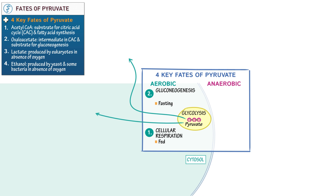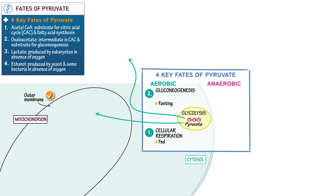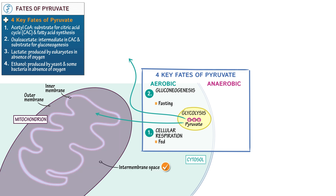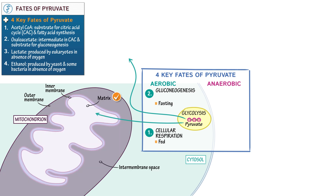Begin with cellular respiration, in which the key fate of pyruvate is acetyl-CoA. Draw a mitochondrion with the outer mitochondrial membrane, which is a phospholipid bilayer, and the inner mitochondrial membrane, which comprises invaginations called cristae. Label the intermembrane space, which lies between the membranes, and label the matrix, which lies within the inner mitochondrial membrane. Show that pyruvate enters the matrix, where it's converted to acetyl-CoA.